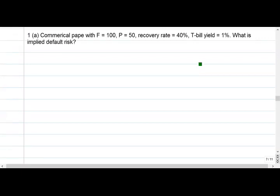So commercial paper with paper is spelled wrong. Anyways, face value 100, price, recovery rate, and default risk.